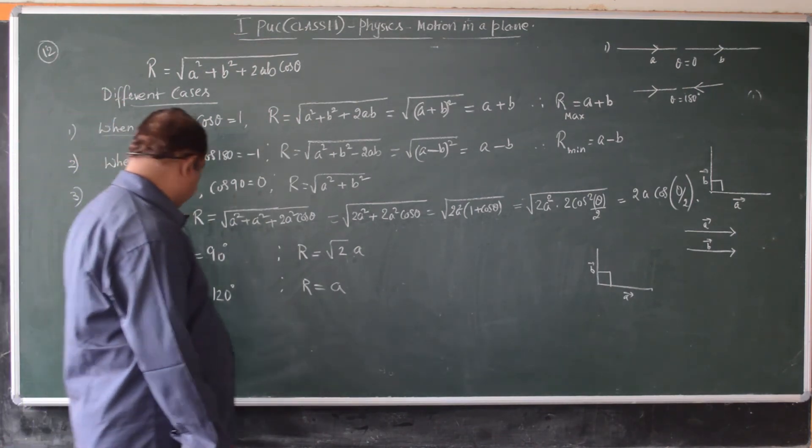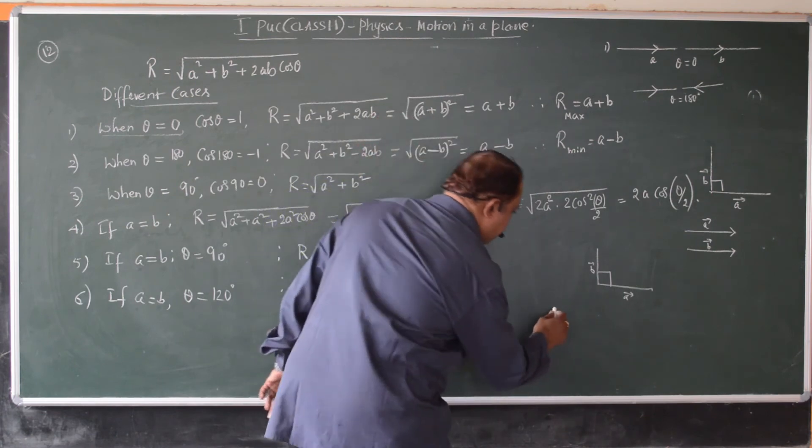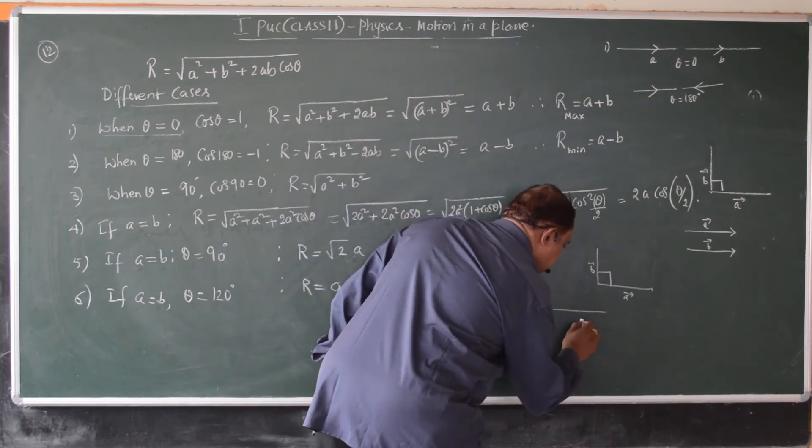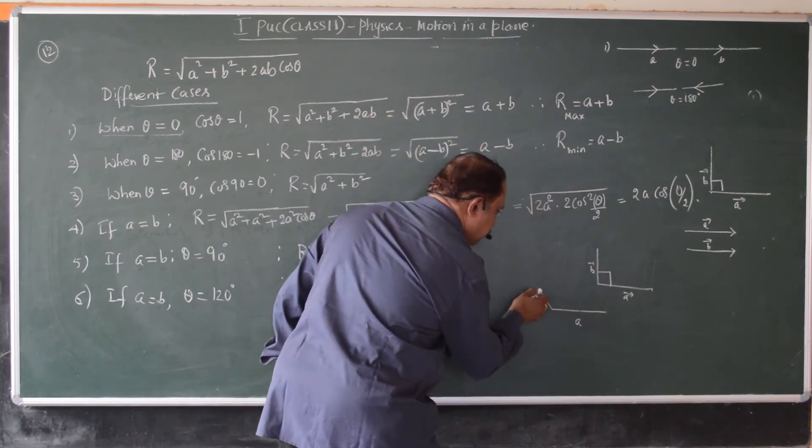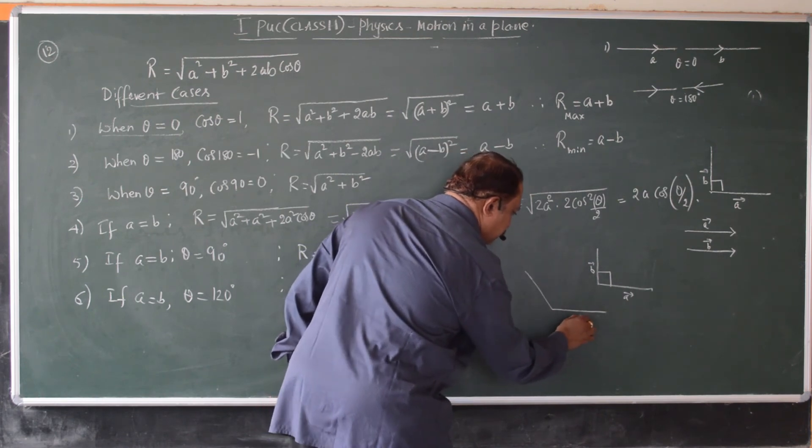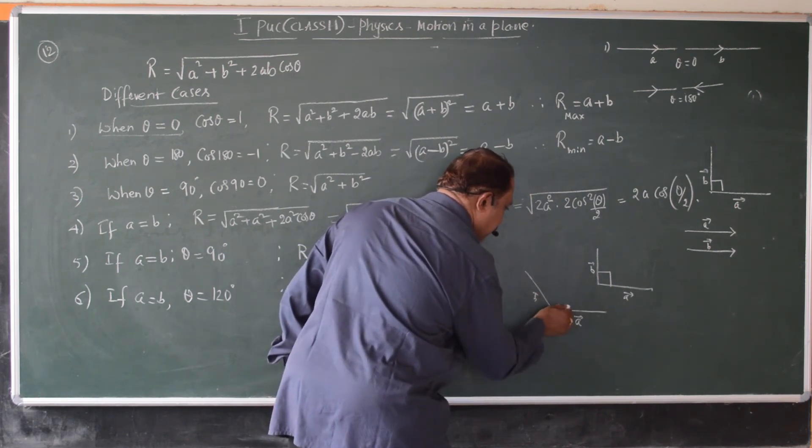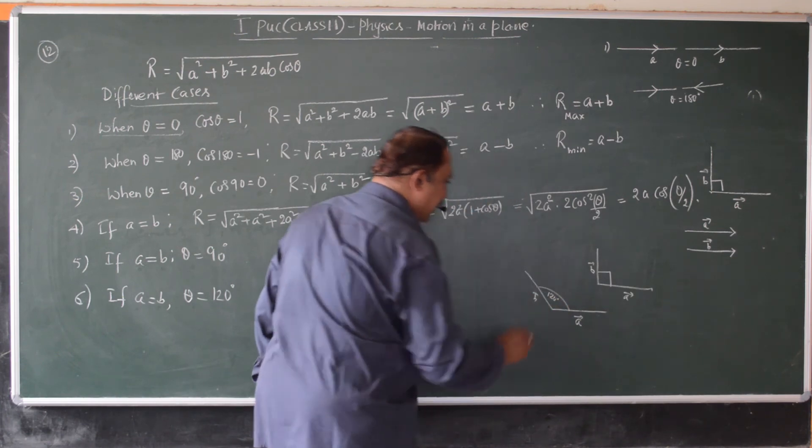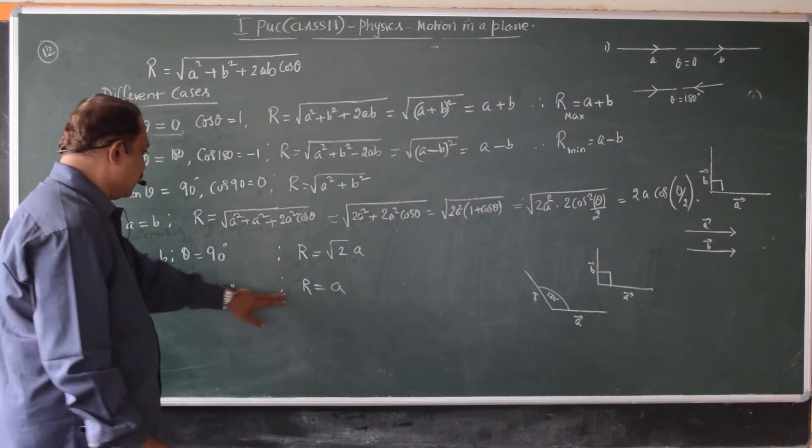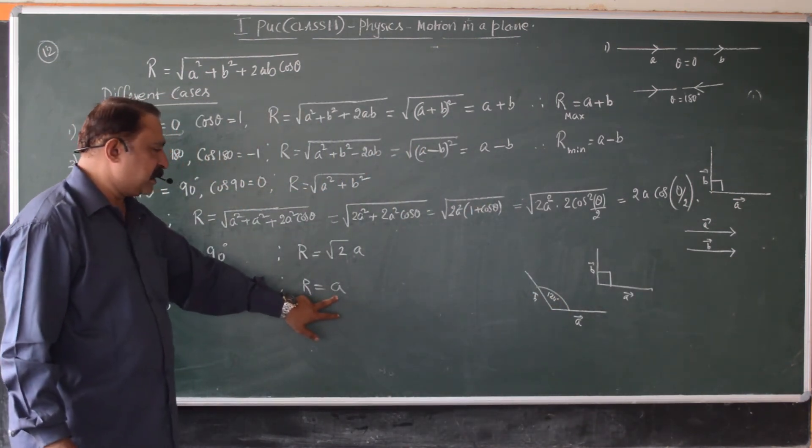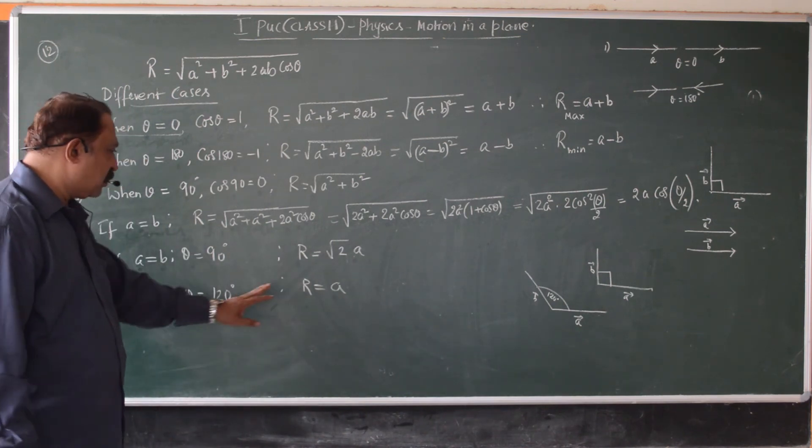So, if a equals b and theta is 120 degree, a equals b and theta is 120, this is a and this is b. Their magnitudes are same. And theta is 120 degree. In this case, the resultant is just equal to either of the vector a or b.